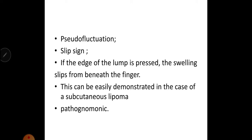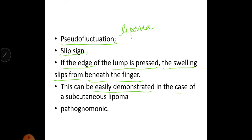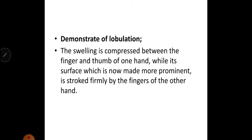What is pseudo fluctuation? What is slip sign? These are pathognomonic for lipoma. Slip sign: if the edge of the lump is pressed, the swelling slips beneath the finger — it can be demonstrated in subcutaneous lipoma. How do we demonstrate lobulation? The swelling is compressed between the finger and thumb of one hand, while its surface is made more prominent by stroking firmly with the fingers of the other hand.